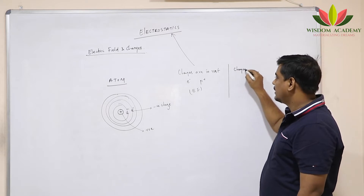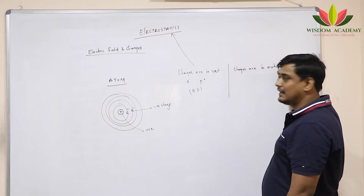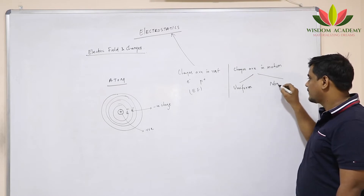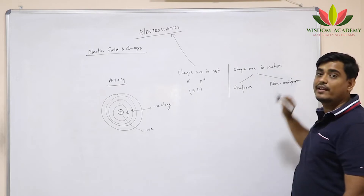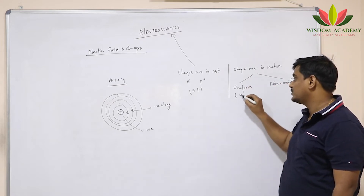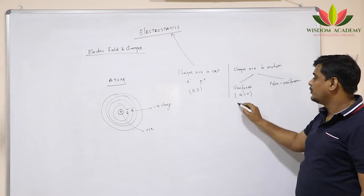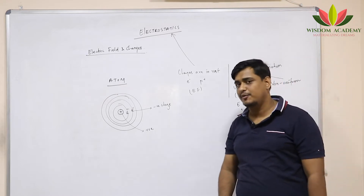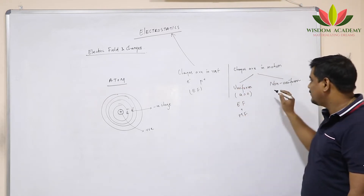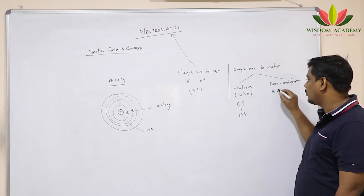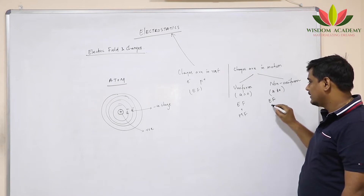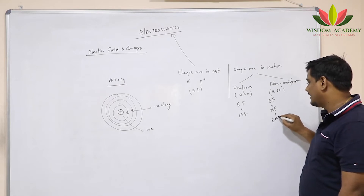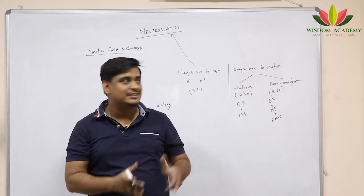When charges start moving, that means charges are in motion, there are two conditions possible: they are moving in uniform motion or in non-uniform motion. If they are moving in uniform motion — meaning acceleration is equal to zero — they will produce electric field and also magnetic field. But if they are in non-uniform motion, that is acceleration is not equal to zero, then in addition to electric field and magnetic field, they will also produce electromagnetic waves.